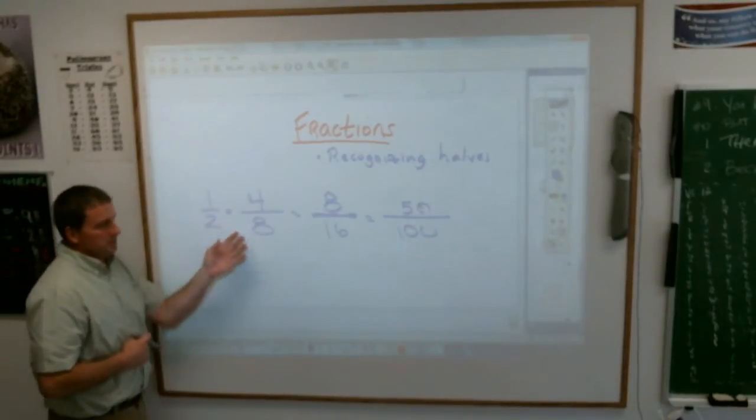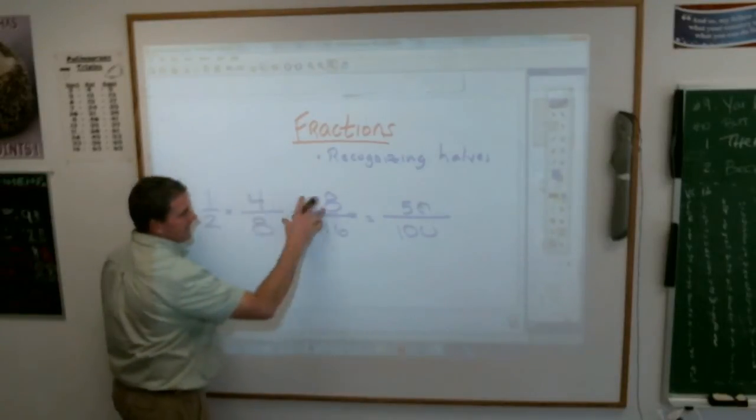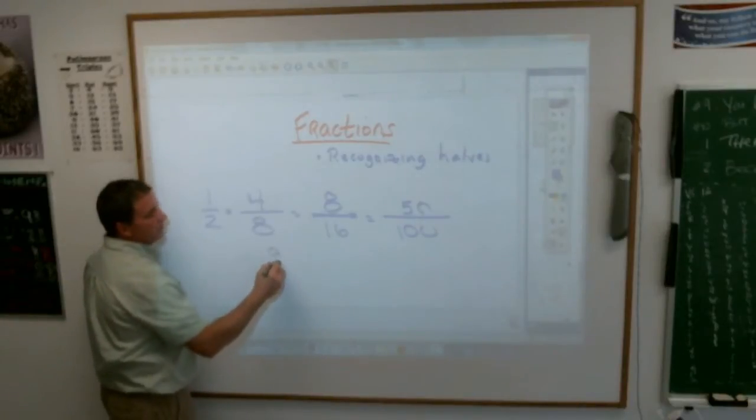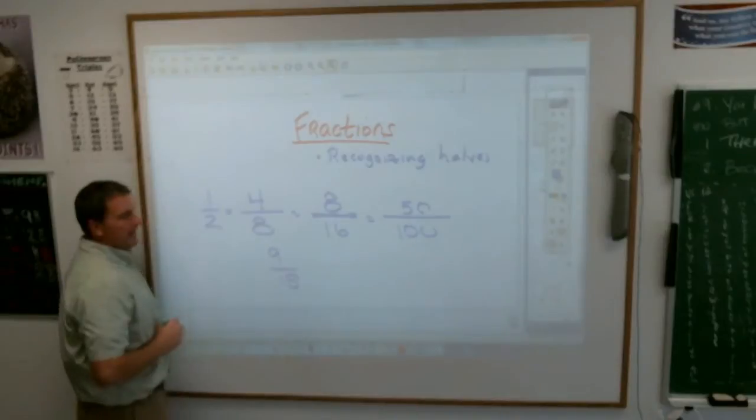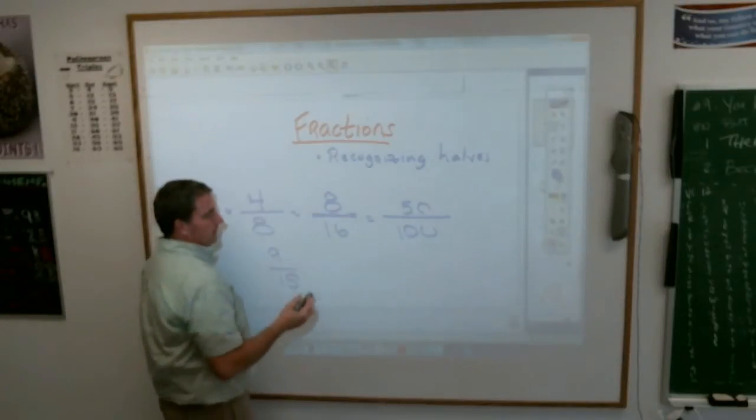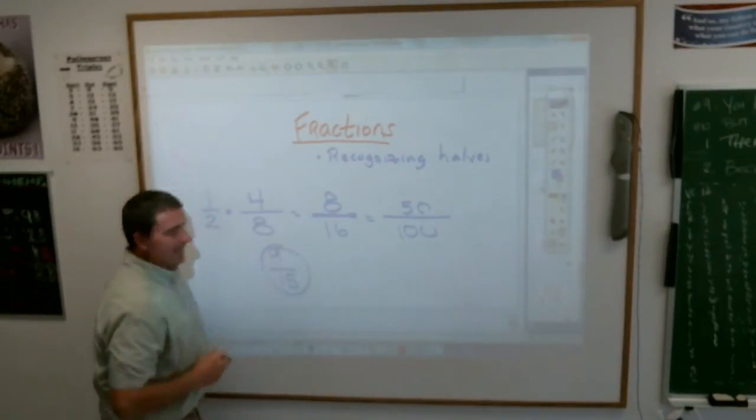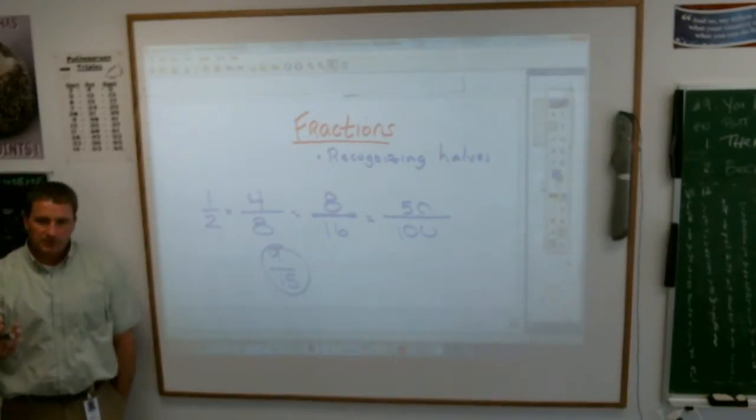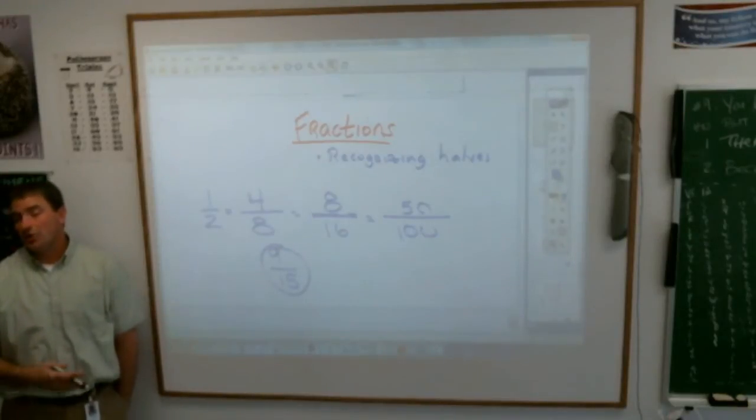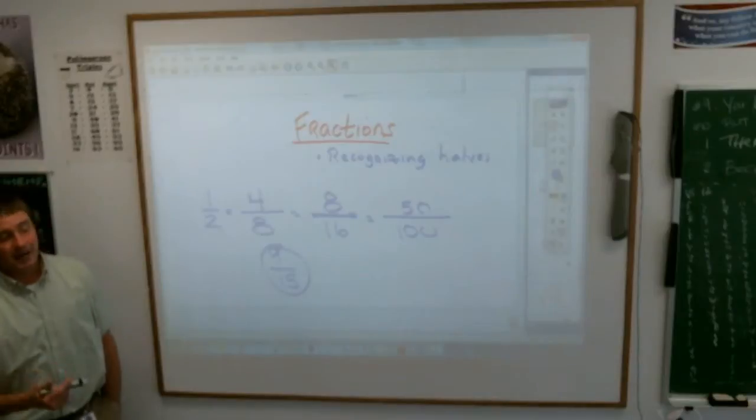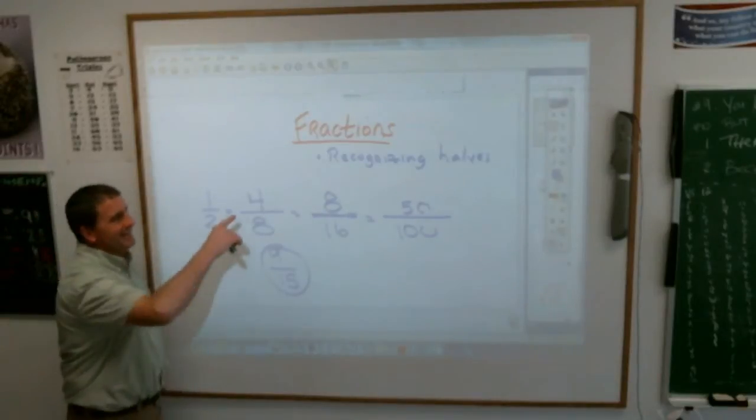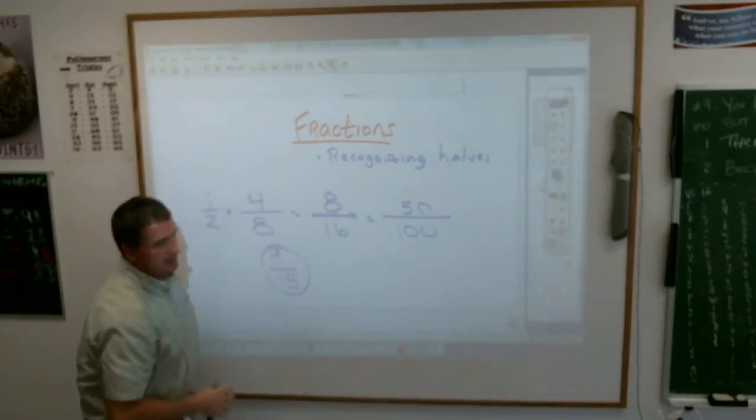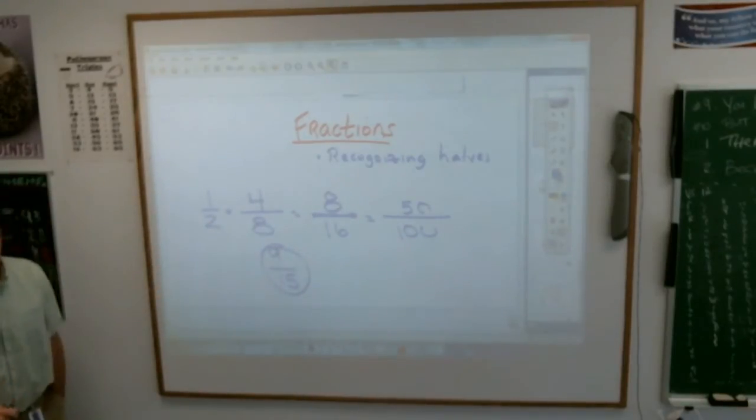But where this comes into play is what about fractions that aren't exactly half? What if my fraction was 9 over 15? 9 over 15. Is 9-15ths going to be more than, if you ate 9-15ths of a pizza, did you eat more than half of a pizza or did you eat less than half of a pizza? And how would you know? More.